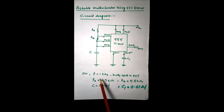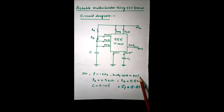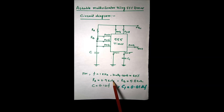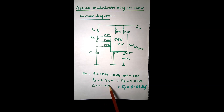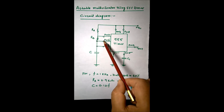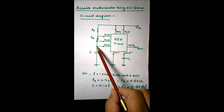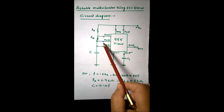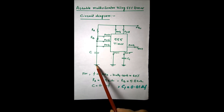Let us consider that the frequency given is 1 kilohertz and the duty cycle is 60%. From the design, we get RA equal to 2.9 kilo, RB equal to 5.8 kilo, and capacitor equal to 0.1 microfarad. RA is to be connected between pin 8 and pin 7, RB between pin 7 and pin 6, and the capacitor with one plate connected to either pin 6 or pin 2 and the other plate to ground.